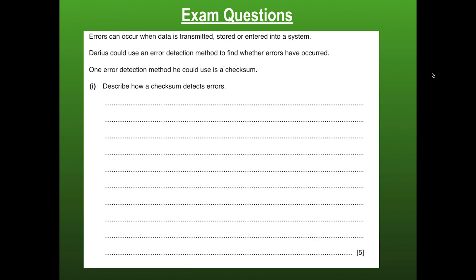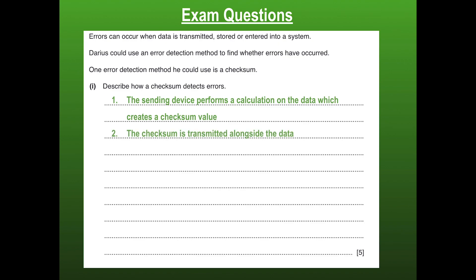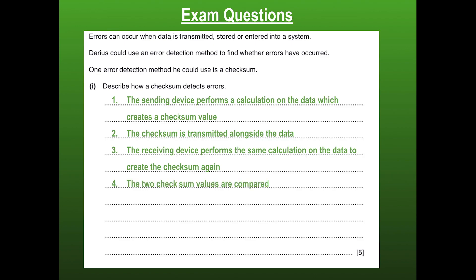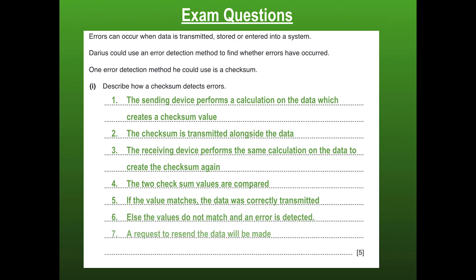Exam question: describe how a checksum detects an error. The sender performs a checksum calculation on the data to create a checksum value. That value is transmitted alongside the data. The receiver performs the same calculation on the received data to create a new checksum value. The two values are compared — if they match, the data was transmitted correctly; if they don't, an error occurred and the data must be resent.